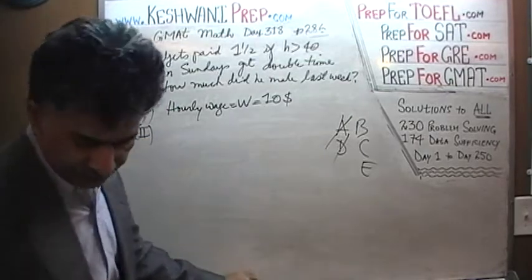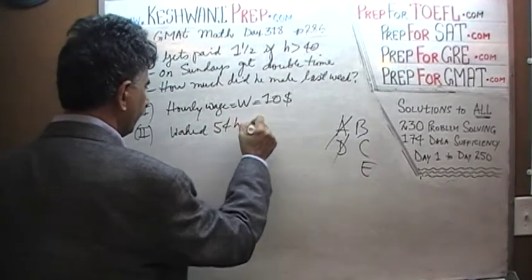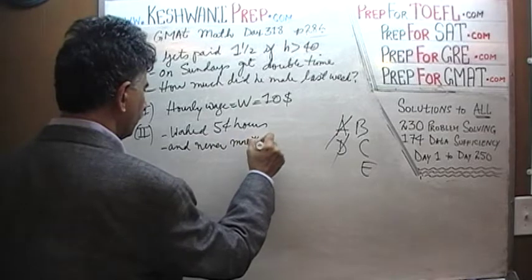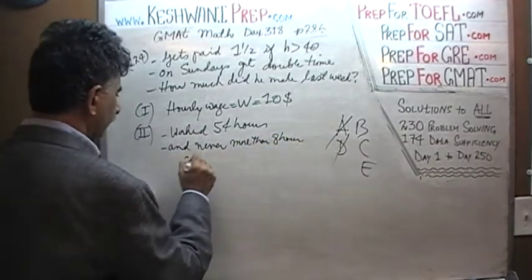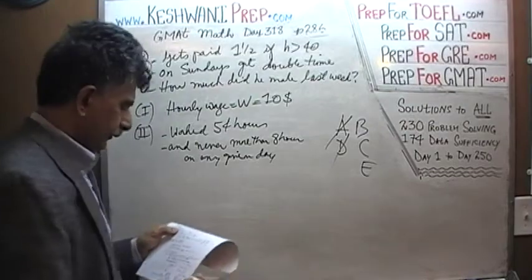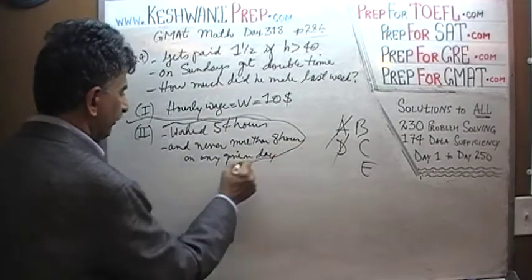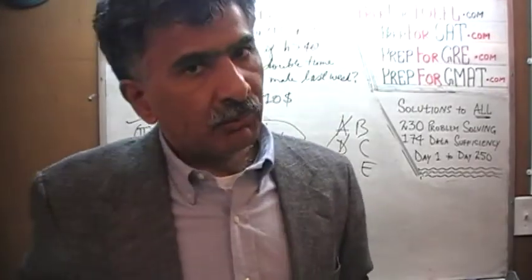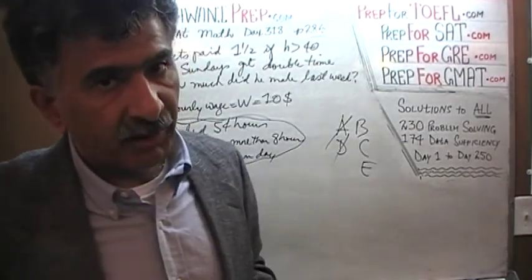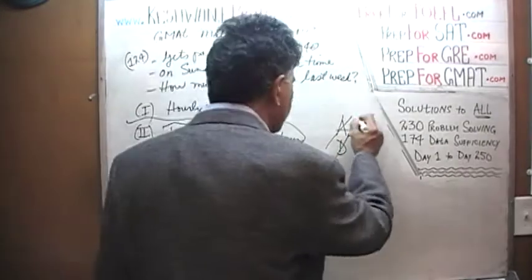The second statement tells us that he worked a total of 54 hours and never more than 8 hours on any given day. Before analyzing this, we should realize that unless we know how much he makes per hour, this information alone will not get us anywhere. The second statement by itself is not sufficient either. We need to put the two statements together.